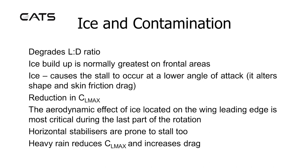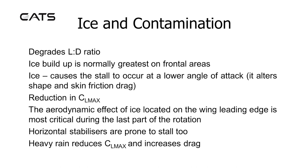Ice and contamination degrades the lift-to-drag ratio. Ice build-up is normally greatest on frontal areas. Ice causes the stall to occur at a lower angle of attack by altering the aerofoil shape and increasing skin friction drag — there is a reduction in CL max. The aerodynamic effect of ice located on the wing leading edge is most critical during the last part of the rotation. Horizontal stabilisers are also prone to stall. Heavy rain reduces CL max and increases drag.